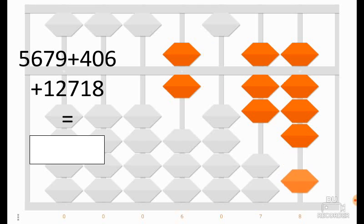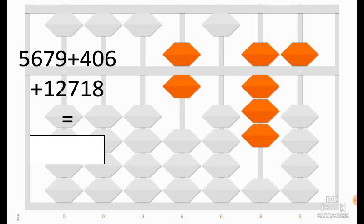We cannot add 6 in the unit column because there are no coins remaining. So 6 is equal to 10 minus 4. We add 10 and we remove 4. And finally we would like to add 12,708.